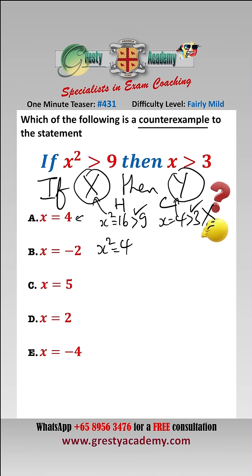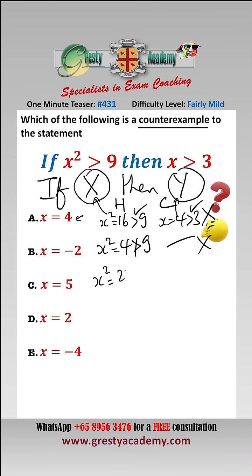x equals -2: well, x squared is equal to 4, which is not greater than 9. As the hypothesis isn't even true, that is irrelevant — it is not a counterexample.